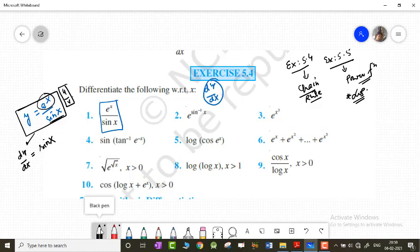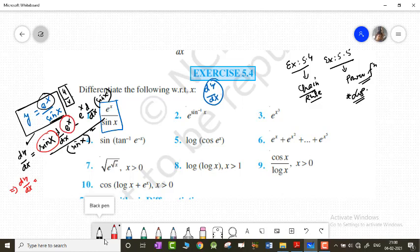Using the quotient rule: u times dv/dx minus v times du/dx over sin x squared. The differentiation of e to the power x is e to the power x. Sin x differentiation is cos x. So dy by dx equals e to the power x sin x minus e to the power x cos x divided by sin squared x.